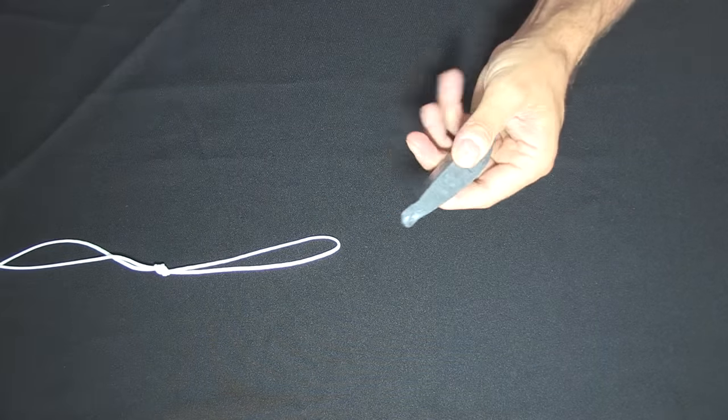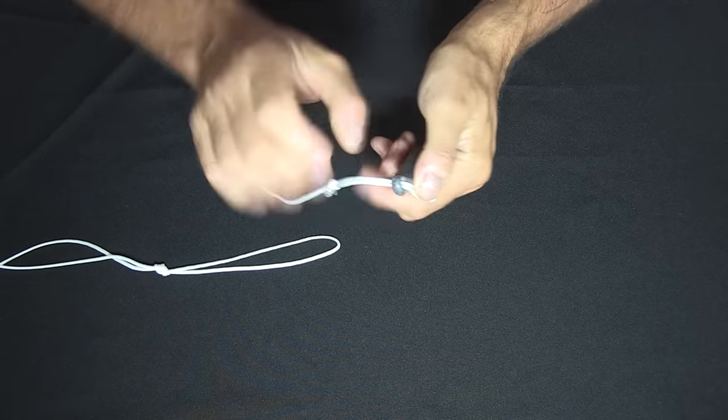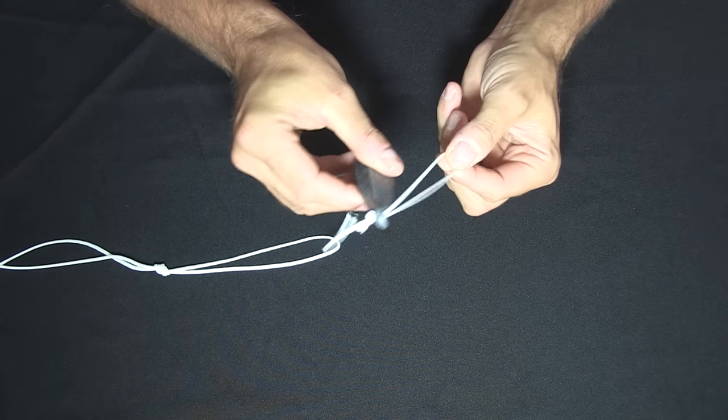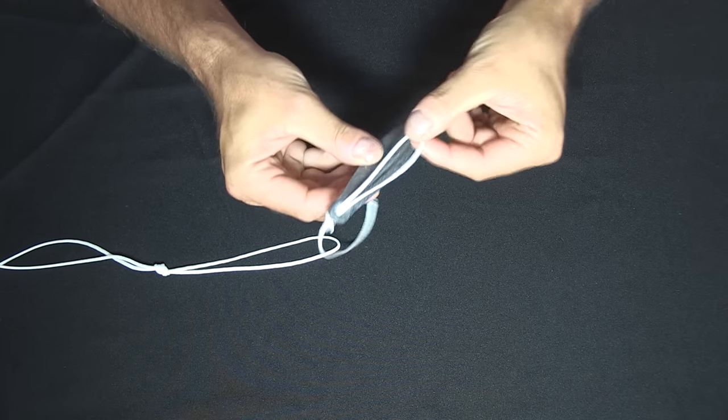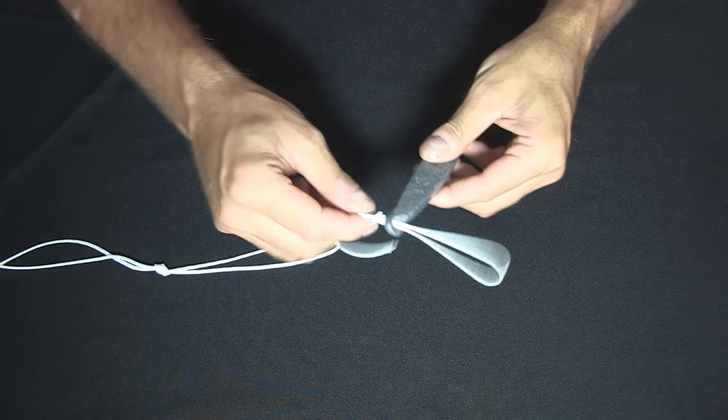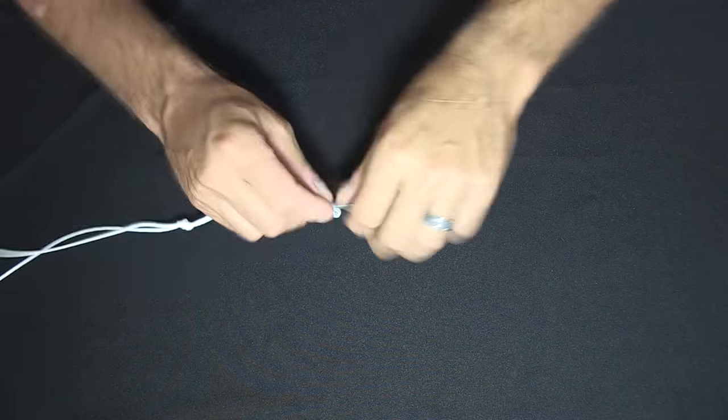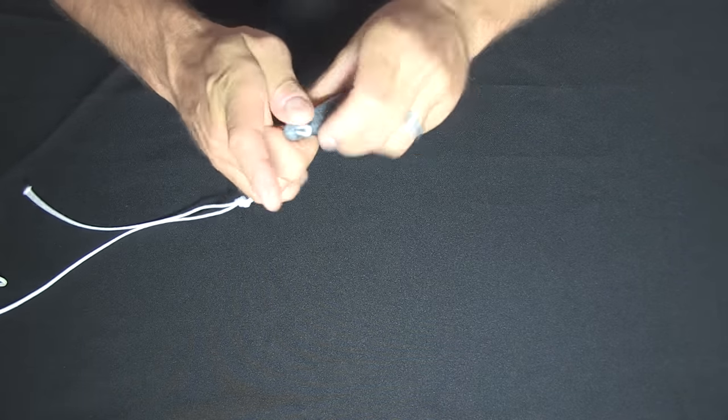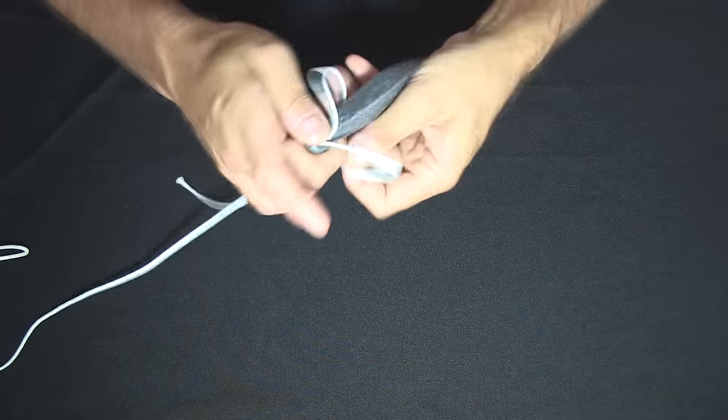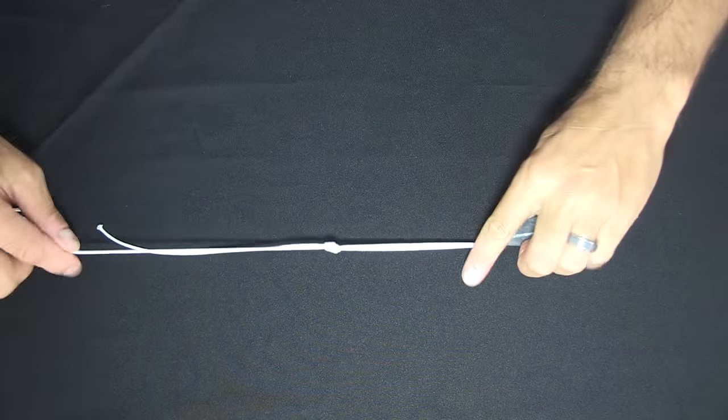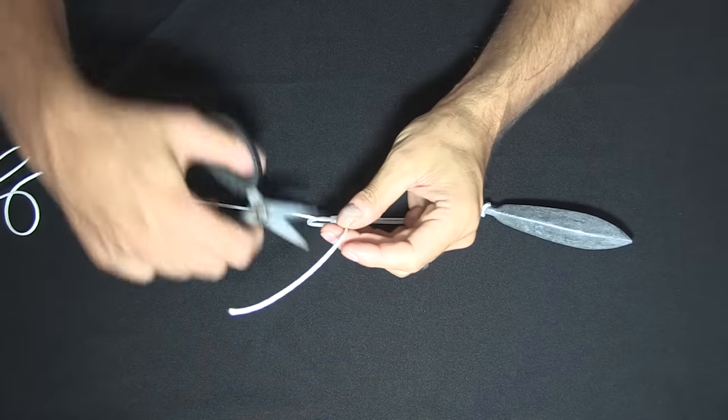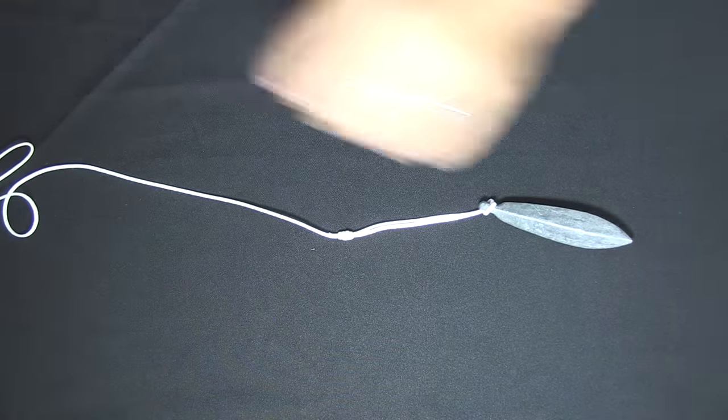If it's too short what happens is the knot will hit on the eye of the sinker, it will not pass through, therefore we can't loop it over the end of the sinker. So loop it through like so, pull it in, cut your tag end off and you're good to go.